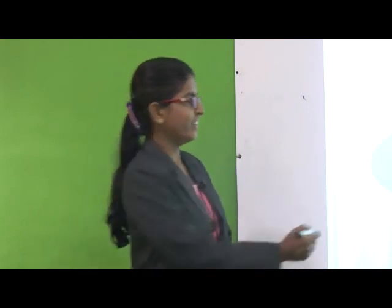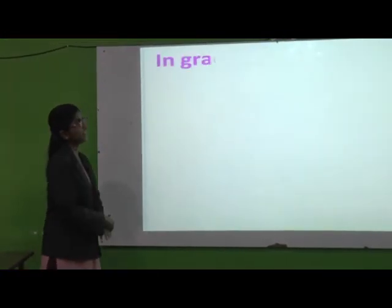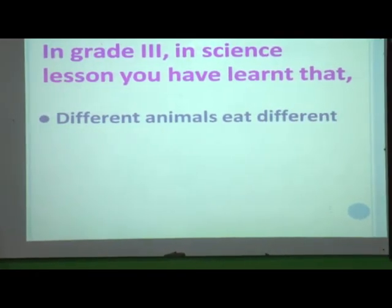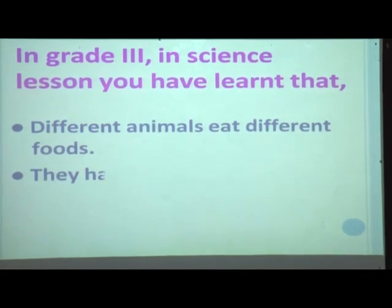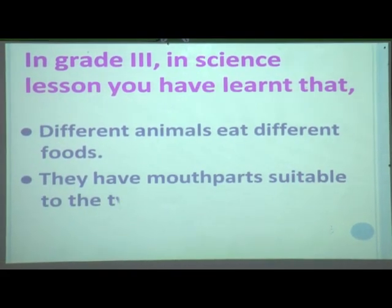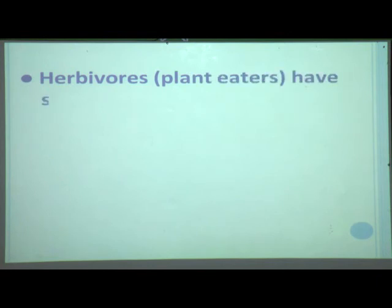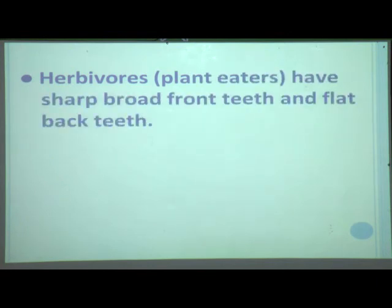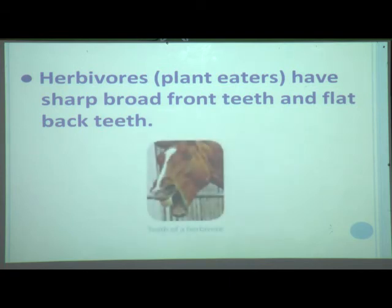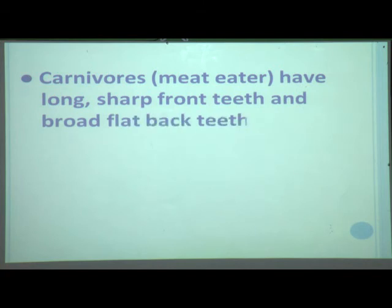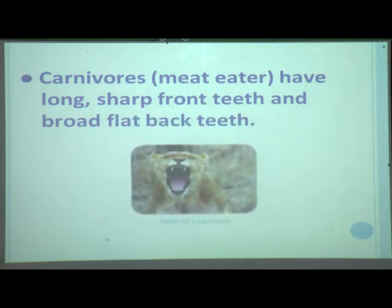Welcome to Nagesh Karasgi Orchid School. I am Savita teacher and I am teaching grade 4 science class. Dear students, in grade 3 science lesson, you have learnt that different animals eat different foods and they have mouth parts suitable to the type of food they eat. Herbivores — that is plant eaters — have sharp broad front teeth and flat back teeth. Carnivores — that is meat eaters — have long sharp front teeth and broad flat back teeth.